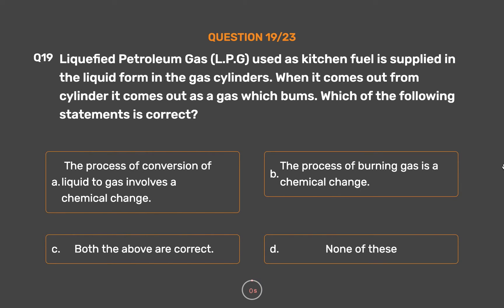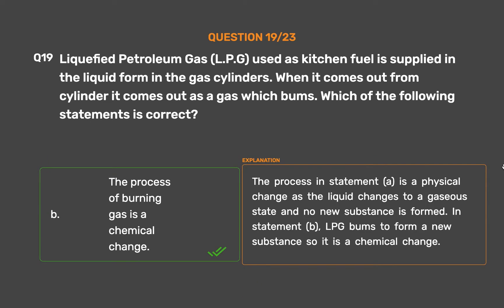The correct answer is Option B: The process of burning gas is a chemical change. The process in statement A is a physical change as the liquid changes to a gaseous state and no new substance is formed. In statement B, LPG burns to form a new substance, so it is a chemical change.